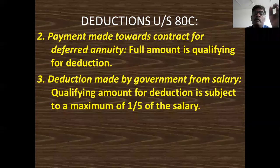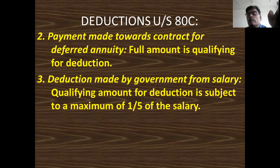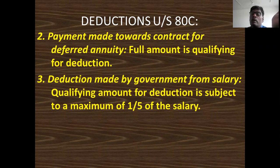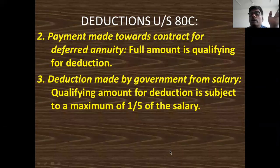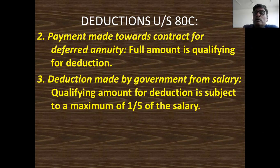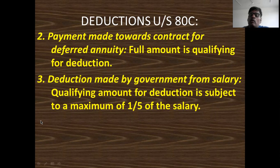The third item is deduction made by the government from salary. The qualifying amount is subject to a maximum of one-fifth of salary. If the deduction is made by the government from your salary for the survival of your family members, then a maximum of one-fifth of your salary is the qualifying amount.